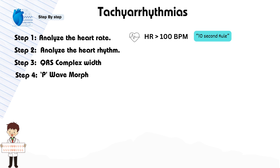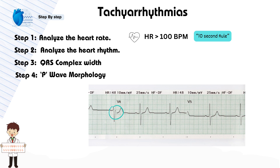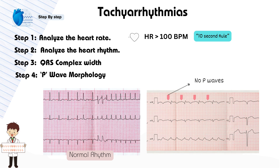Step 4: Check the morphology of the P-wave. Examine factors like the presence of P-waves, their relationship with QRS complexes, and their shape. For example, if you observe P-waves before each QRS complex and they have a uniform shape, it often indicates a normal rhythm. However, if P-waves are absent before QRS complexes, it may suggest atrial fibrillation or an issue in the AV node.